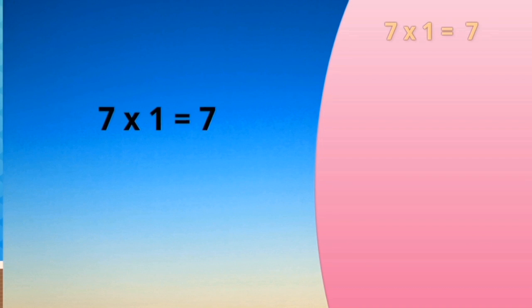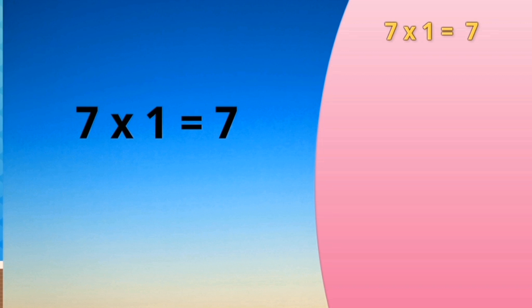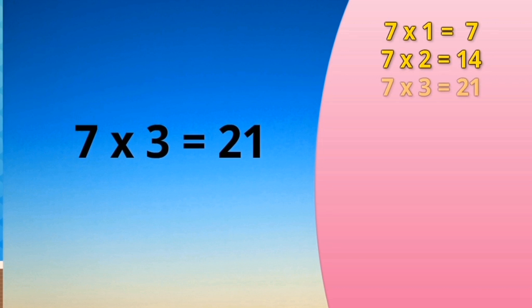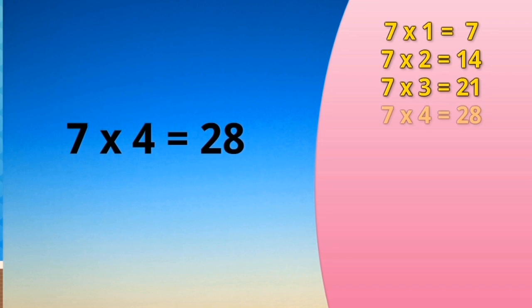7 times 1 is 7. 7 times 2 is 14. 7 times 3 is 21. 7 times 4 is 28.